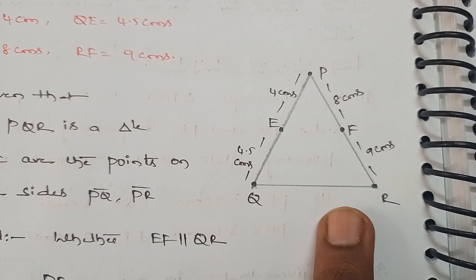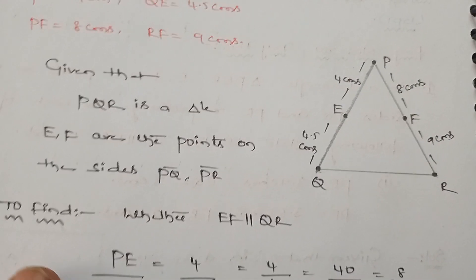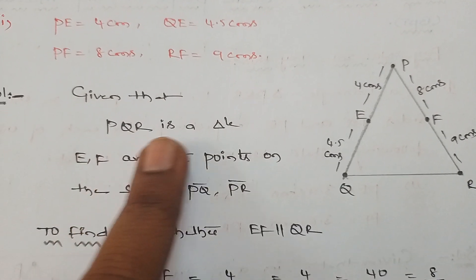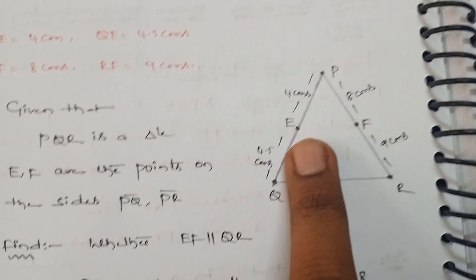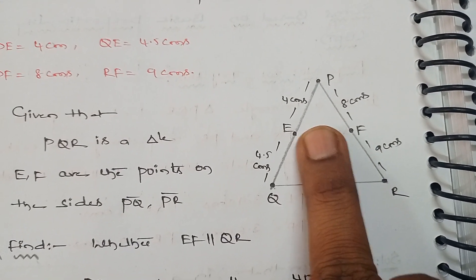We need to check whether EF is parallel to QR based on the given dimensions and the theorem. Now write down what is given in the question. Given that PQR is a triangle and E, F are points on the sides PQ and PR, where E is a point on PQ and F is a point on PR.